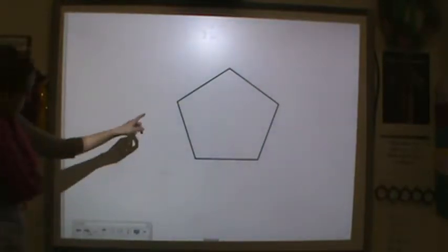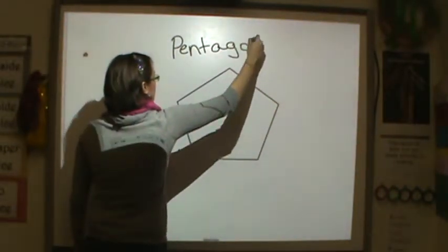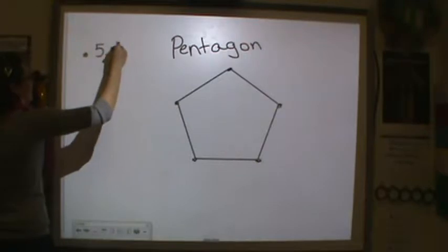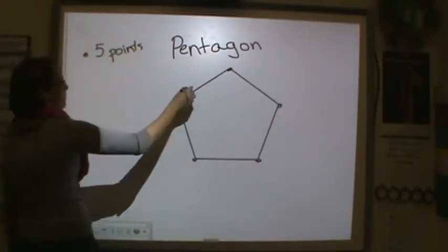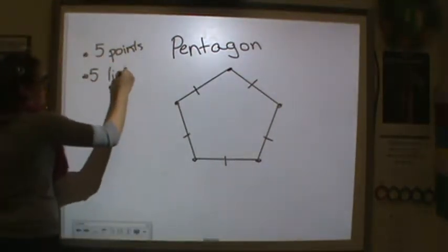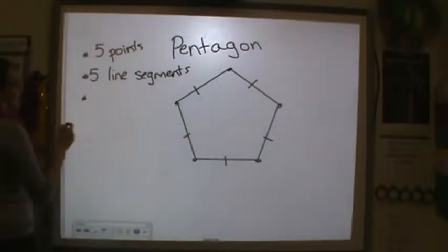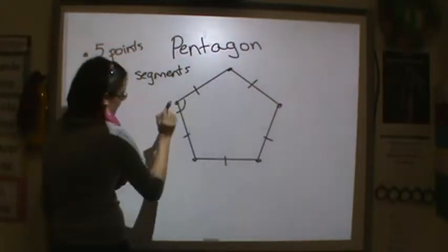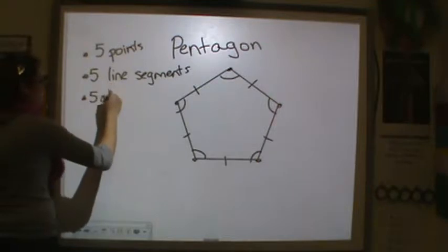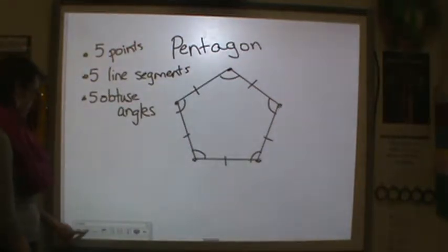So let's look at this guy. We have points in our pentagon — one, two, three, four, five points. We have one, two, three, four, five line segments. And then we also have angles — one, two, three, four, five. And they're all obtuse angles, five obtuse angles, because they're greater than a right angle. They're greater than 90 degrees.